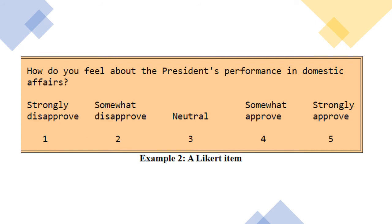Now we can look at the Likert item, which is extremely different from a Likert scale. In a Likert scale you have 4 or 5 statements measured together. A Likert item, by contrast, is a single question — for example, 'How do you feel about the president's performance in domestic affairs?' — assessed with a 5-point scale: strongly disapprove, somewhat disapprove, neutral, somewhat approve, and strongly approve.